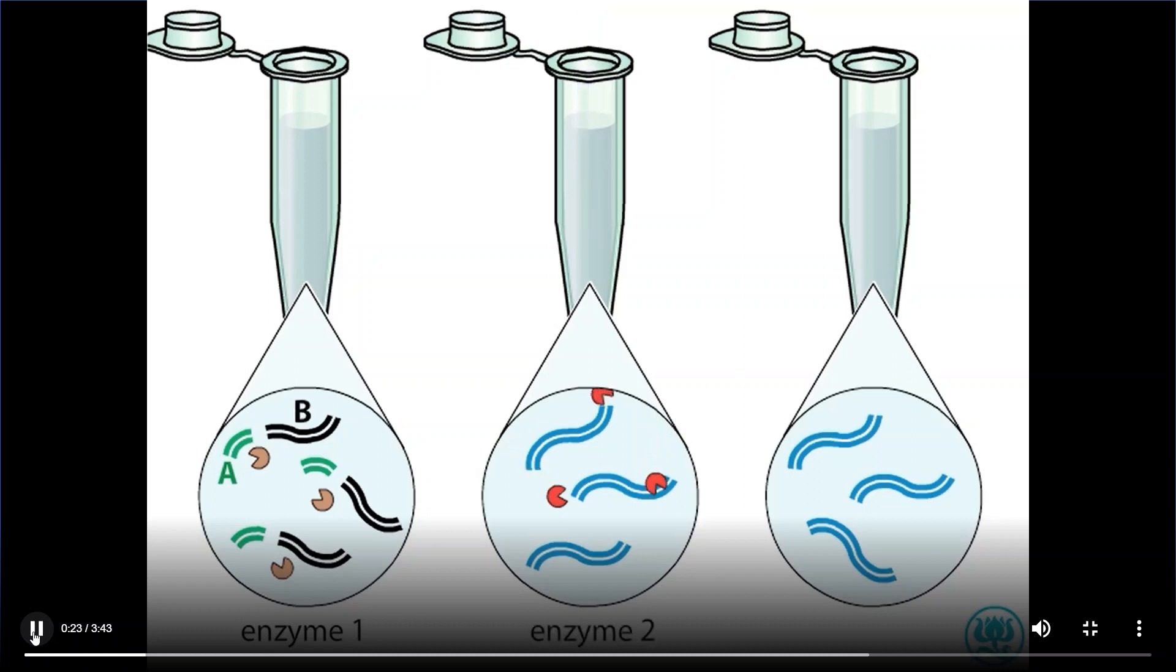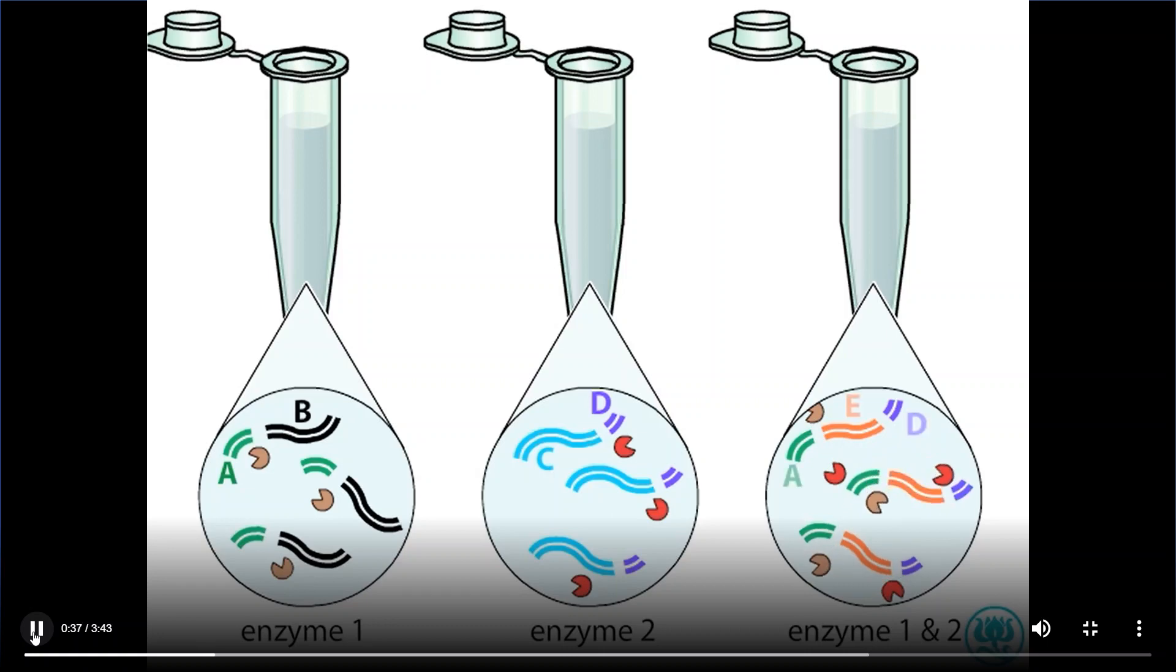Enzyme 2 cleaves the DNA at a different recognition sequence, yielding fragments C and D. Adding both enzymes yields fragments A, E, and D.